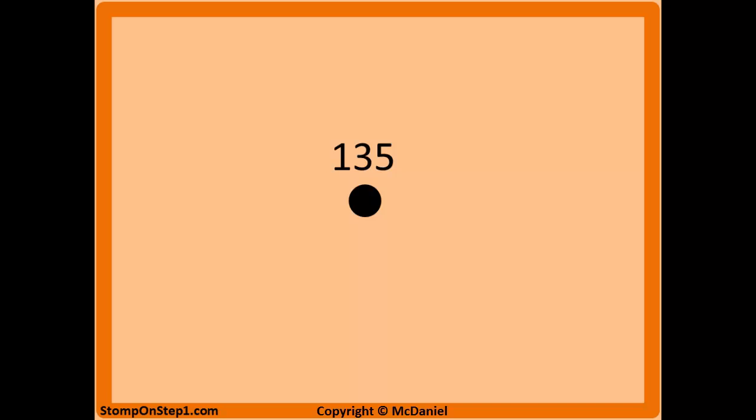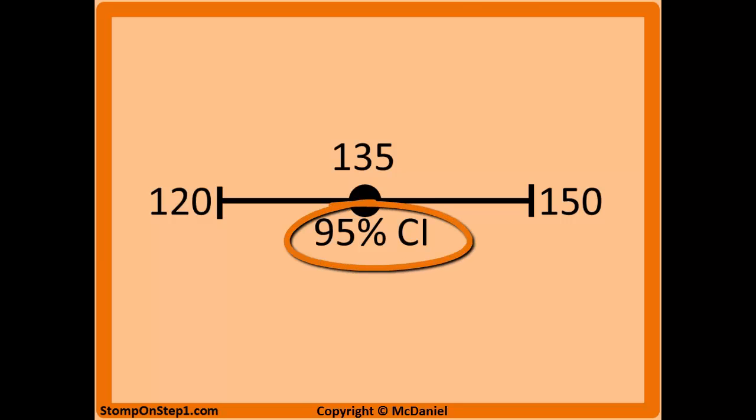So, imagine you have a study population of 100 people and the average systolic blood pressure for that group is 135. Now you're trying to take those results and try to guess what the average systolic blood pressure is among the entire county that you were doing the study in. This is where you would apply the confidence interval and the most common confidence interval is the 95% confidence interval. That means that you are 95% sure the actual value in the overall county would be somewhere between 120 and 150. These are numbers I just threw out for example, so don't get too wrapped up in that.